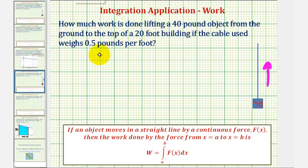And therefore, the force function f of x would be equal to 40 pounds, the weight of the object, plus the weight of the cable, which again is going to change as the object moves upward.